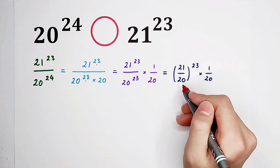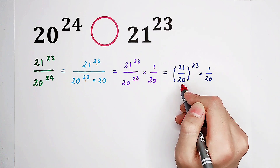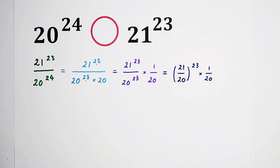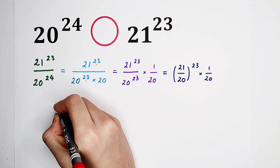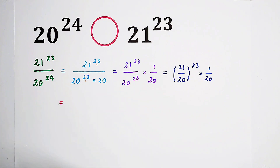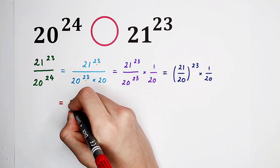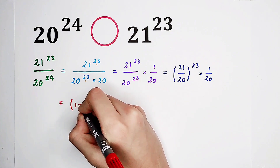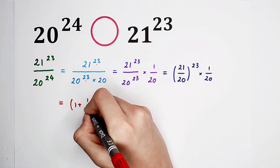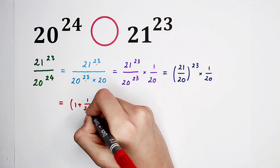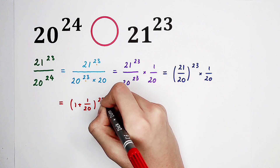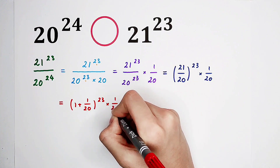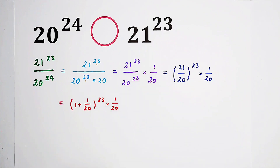Then what shall we do? 21 over 20 can be written as 1 plus 1 over 20. So here in the bracket, it is 1 plus 1 over 20, all to the power of 23, times 1 over 20.